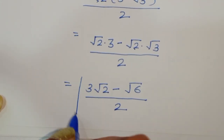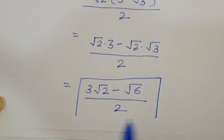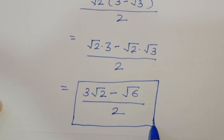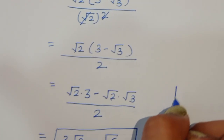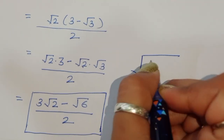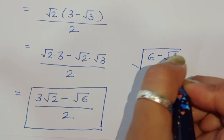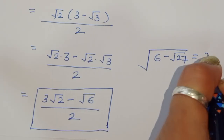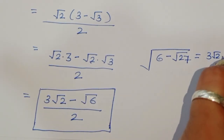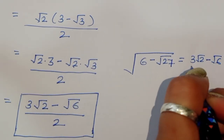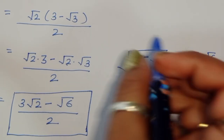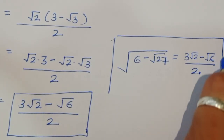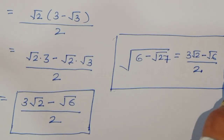So the final answer is: the value of square root of 6 minus square root of 27 is equal to 3 square root of 2 minus square root of 6, divided by 2. This is the solution. Thank you.